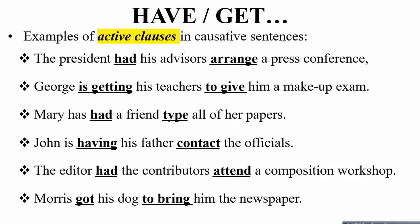Here are some examples with active clauses using 'have' or 'get'. First: 'The president had his advisors arrange a press conference' — 'had' followed by a simple verb form. Second: 'George is getting his teachers to give him a makeup exam' — regardless of tense, the following clause is in the infinitive form.